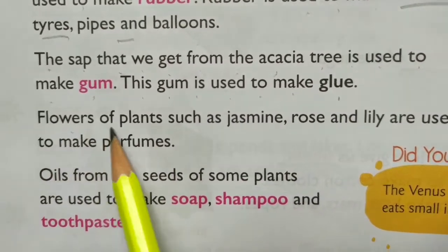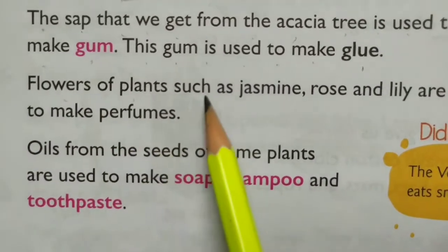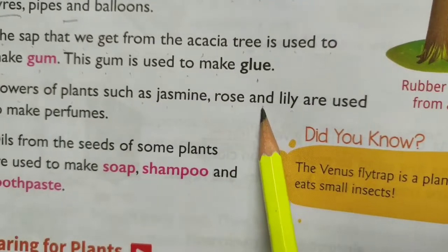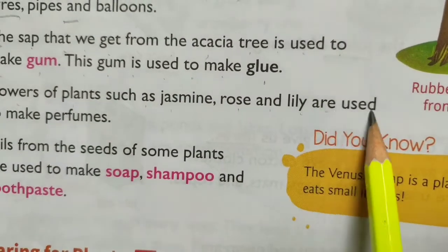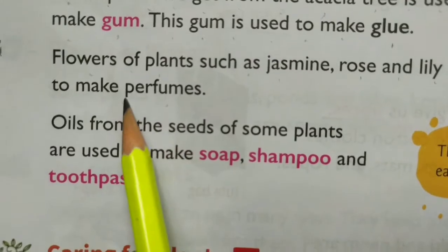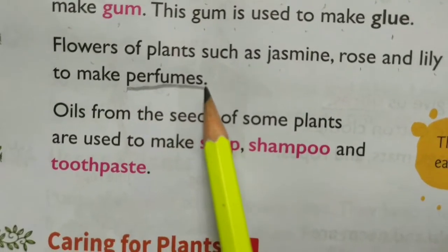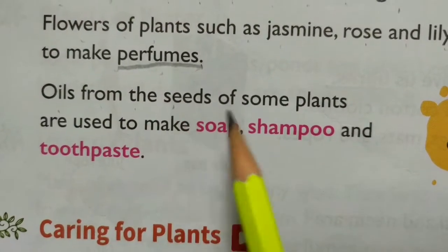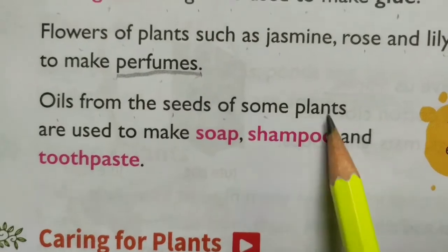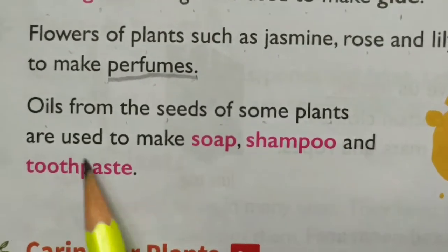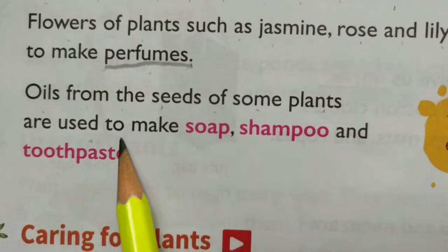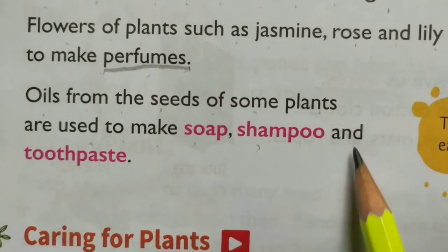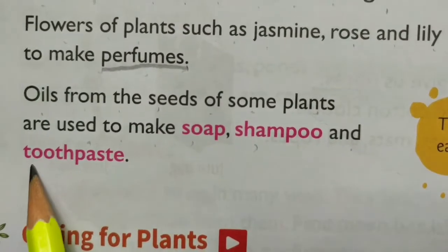Flowers of plants such as jasmine, rose and lily are used to make perfumes. Oils from the seeds of some plants are used to make soap, shampoo and toothpaste.